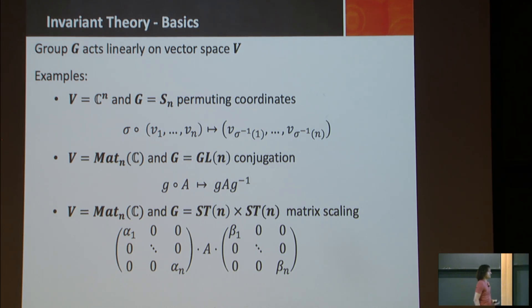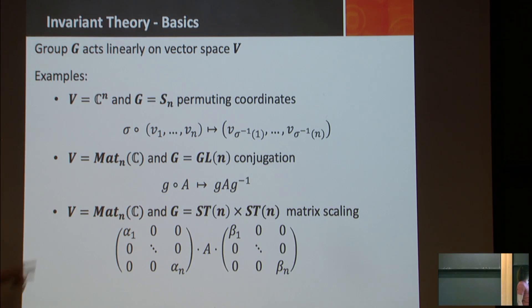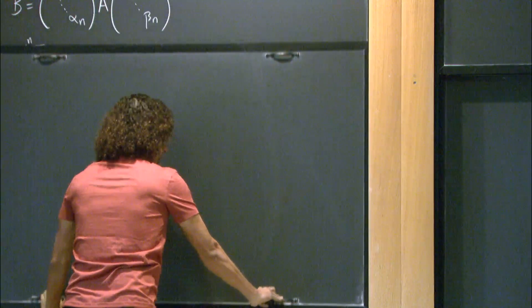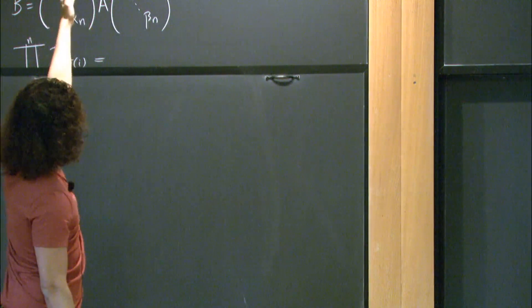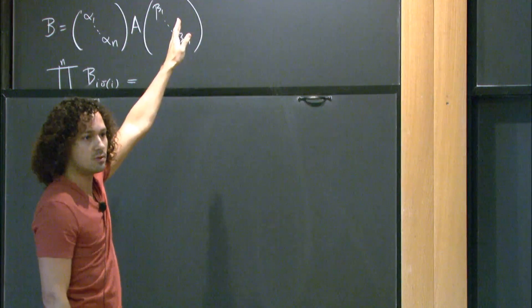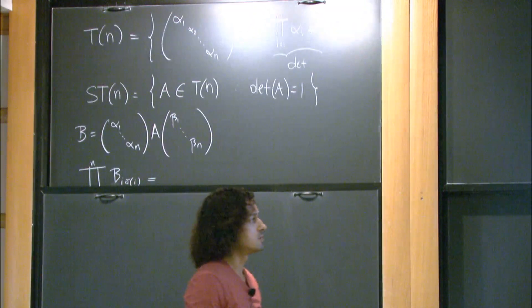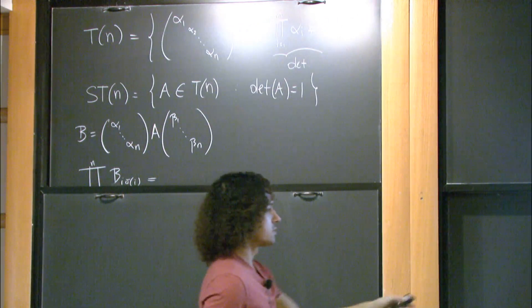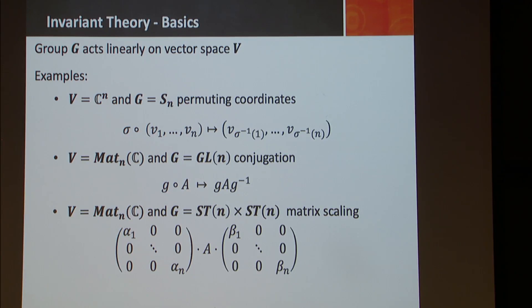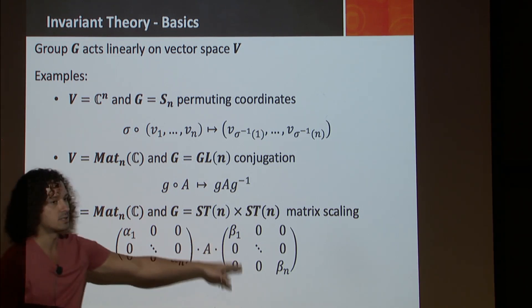Another group is the one responsible for the matrix scaling problem. Here the vector space is the space of complex matrices. My group is this ST_n, which we call the special torus — the set of all diagonal matrices with determinant one. So you have the torus, which is all diagonal matrices with determinant non-zero; the special torus is only the set of all diagonal matrices with determinant one. The product of two tori acts on the matrix: the first diagonal matrix scales the rows, and the second one scales the columns.